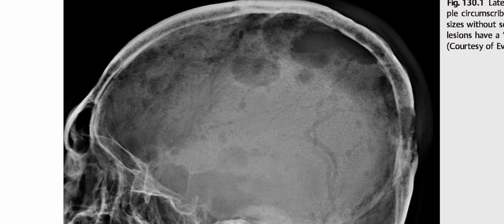These are images of a 42-year-old man presenting with generalized aches and pain. On the lateral skull radiograph, there are multiple circumscribed calvarial lucencies of varying sizes without sclerotic margins, and many of these lesions have a typical punched-out appearance. These lytic skull lesions in an adult patient — the top differential considering this typical punched-out appearance — is multiple myeloma.